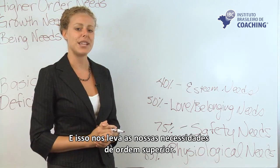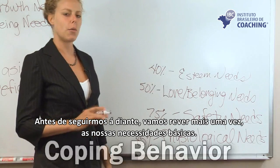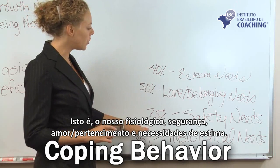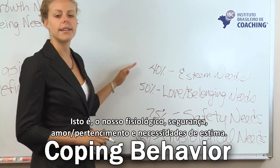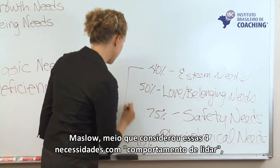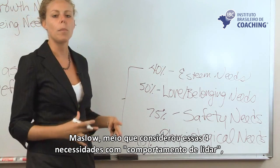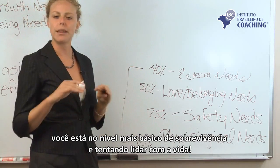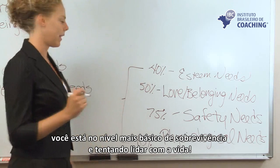Before we move on to the higher order needs, let's recap the four basic needs: physiological, safety, love and belonging, and esteem. Maslow considered these four basic needs as coping behavior — when you're fulfilling them, you're really at the most basic level of survival and trying to cope with life.